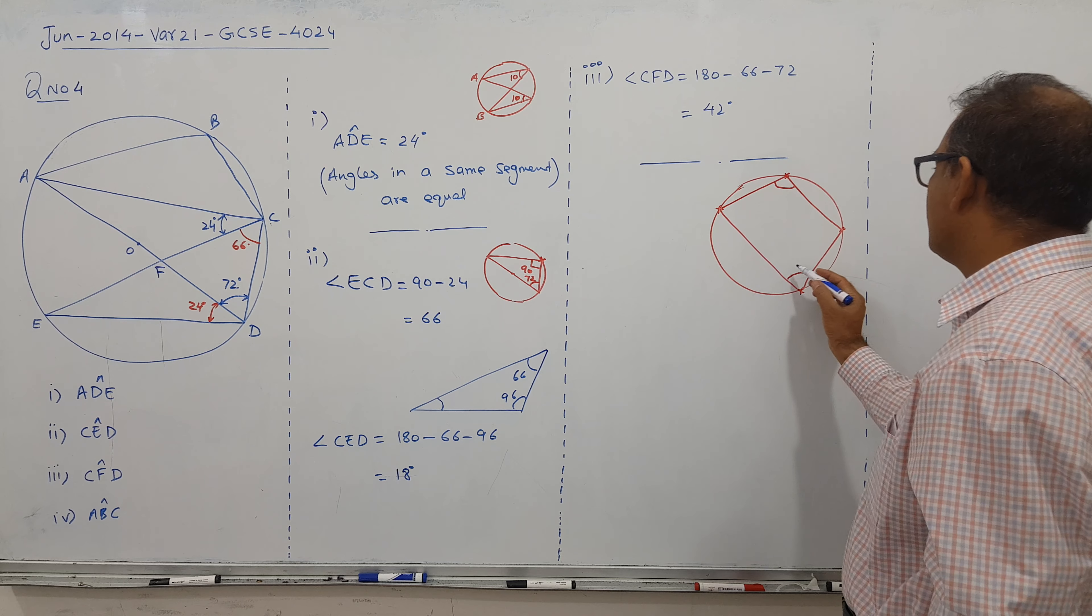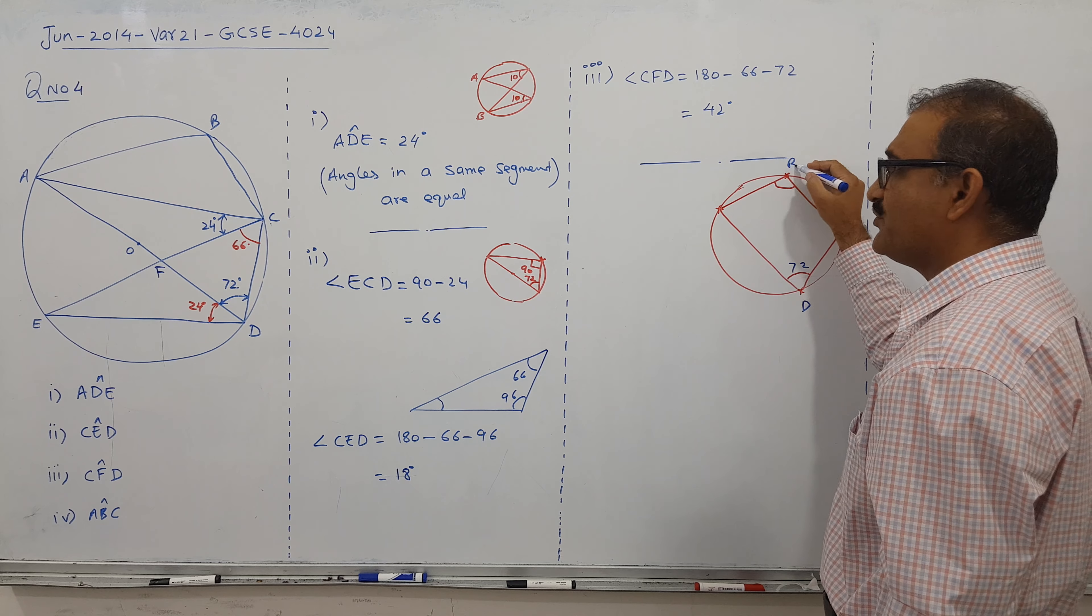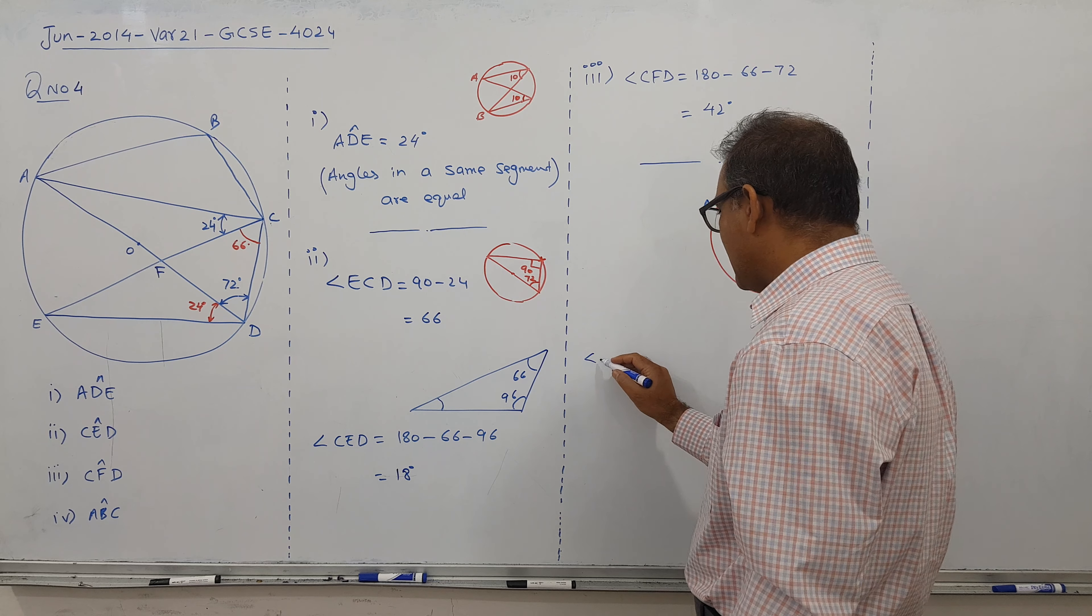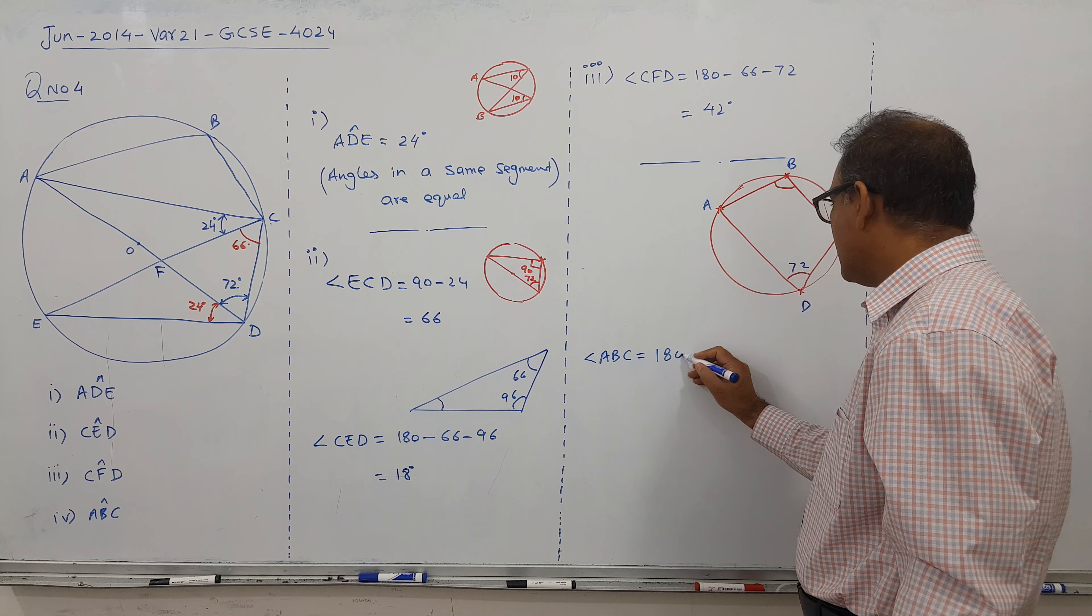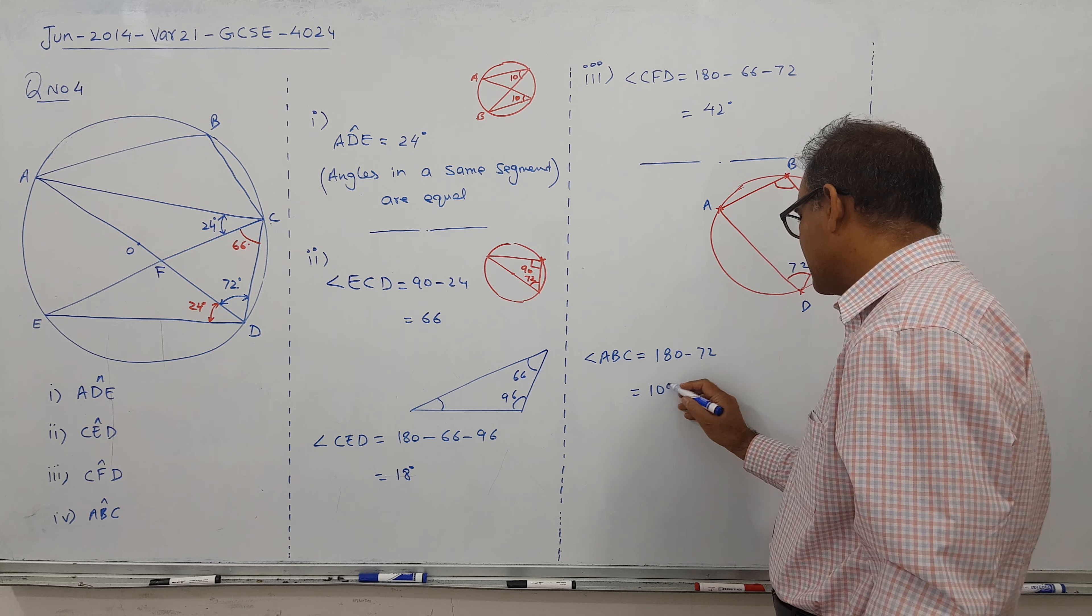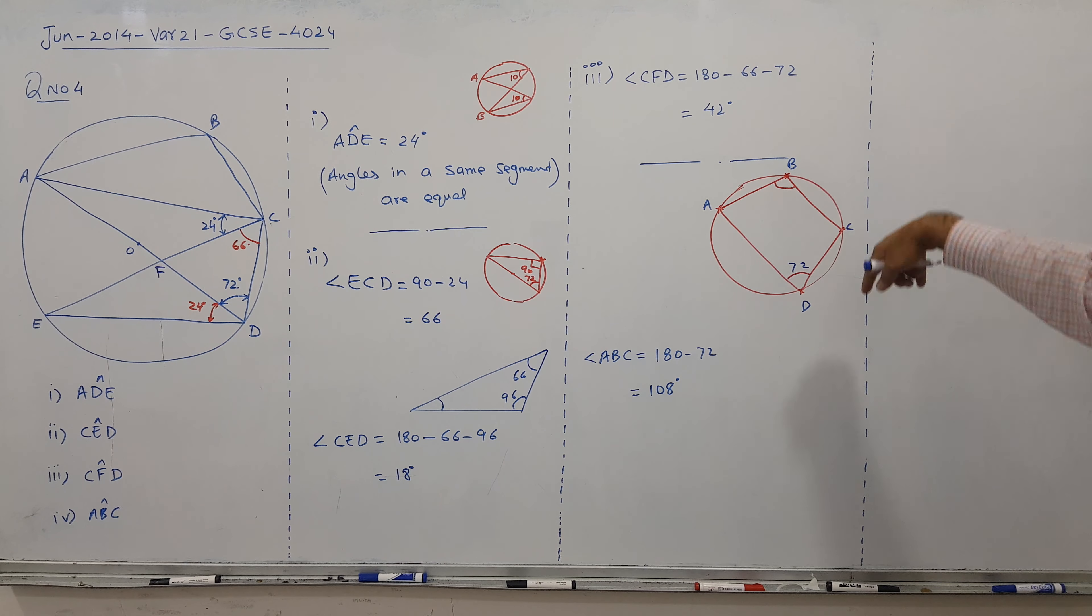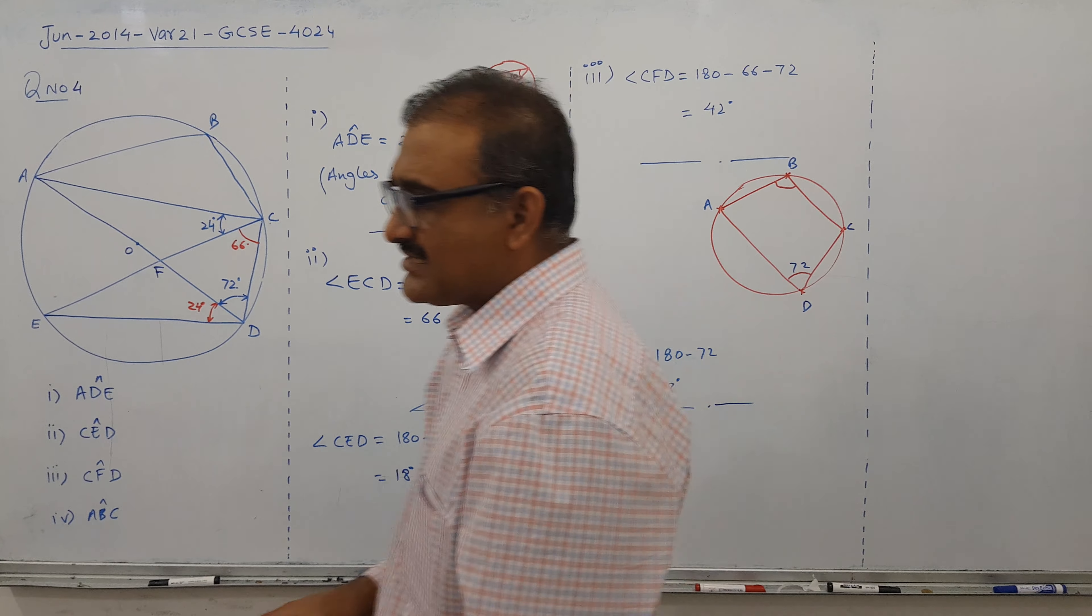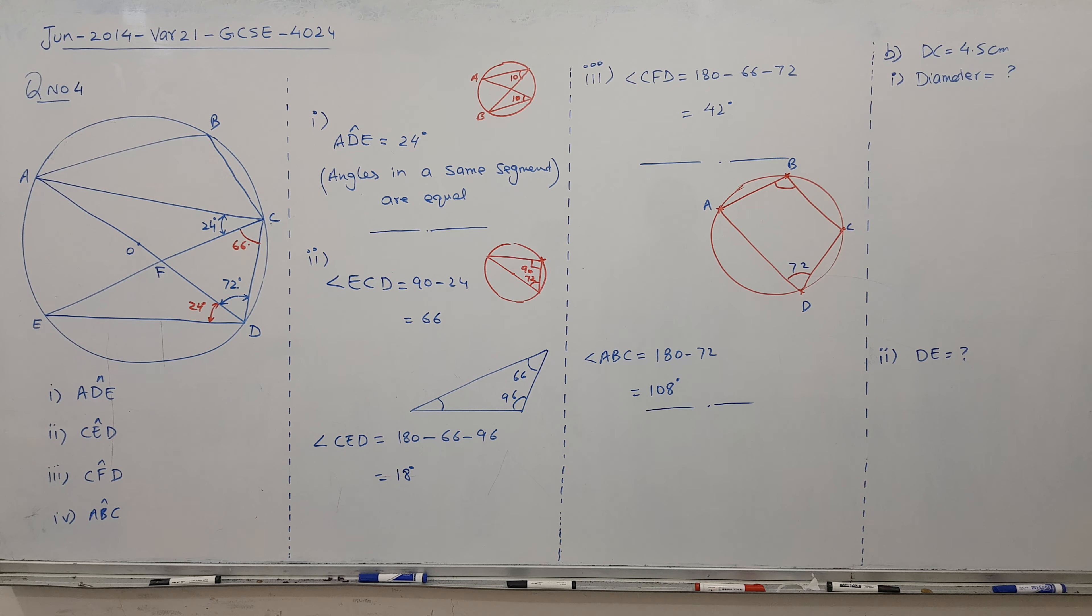So if this angle is 72, this is D, C, B, and A. Angle ABC equals 180 minus 72, so 108 is the answer because they are supplementary. Let's go for the next part.